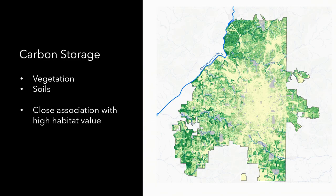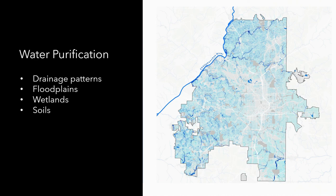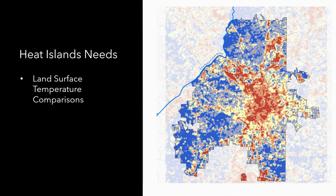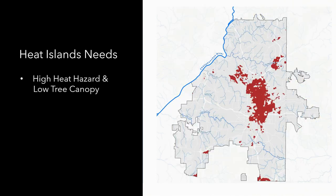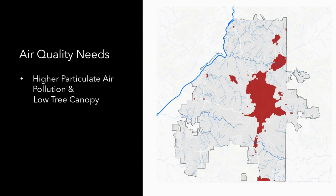We also looked at ecosystem services: carbon storage in trees and soil, areas providing the greatest value for flood mitigation and water purification, and the urban heat island signature — with the downtown core and its radiant development corridors showing highest heat in red. We then intersected areas of highest heat island hazard with neighborhoods of low tree canopy to identify where urban greening is most needed. Similarly, we modeled particulate air pollution, again radiating from downtown, and identified areas of high pollution with low canopy that could benefit from additional trees.